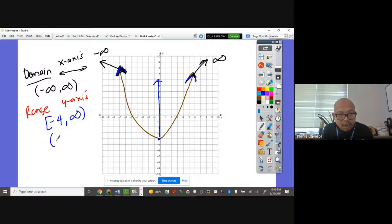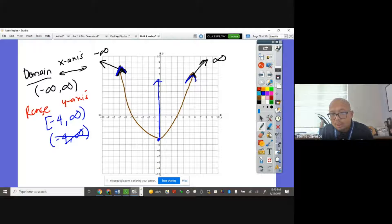You cannot write here negative 4 to infinity. This is wrong. Why is this wrong? Because negative 4 is close here. If this was open, when I say open, there's a big hole in here, then the parenthesis negative 4 will work. Open parenthesis. But since it's close, it's going to be a bracket, okay?